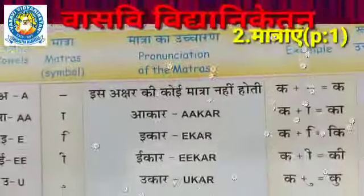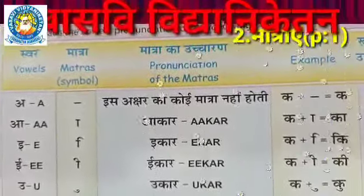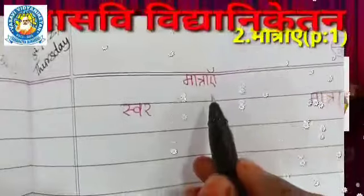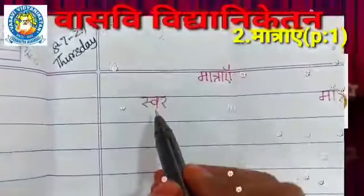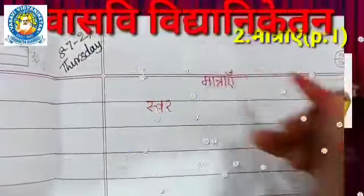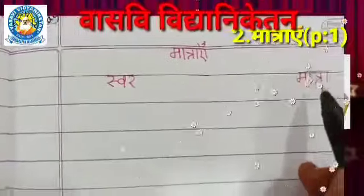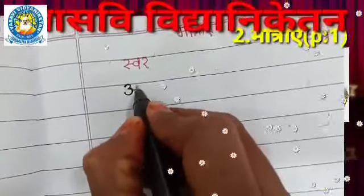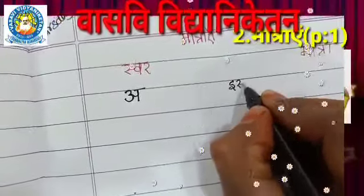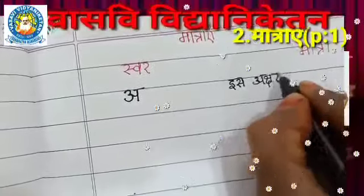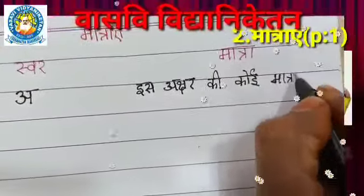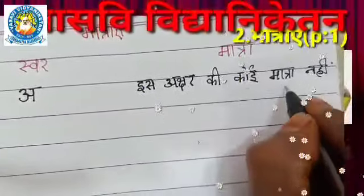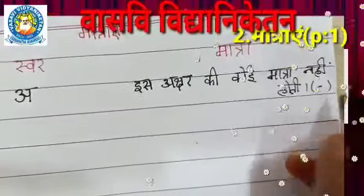Ok so these notes - I will show you how to write them. Take all of you the notes. Please write heading - 'Maatra'. Write the date: 8/7/21, Thursday. Write the heading - ok - 'Maatra'. This is chandra bindu. Swar maatra.